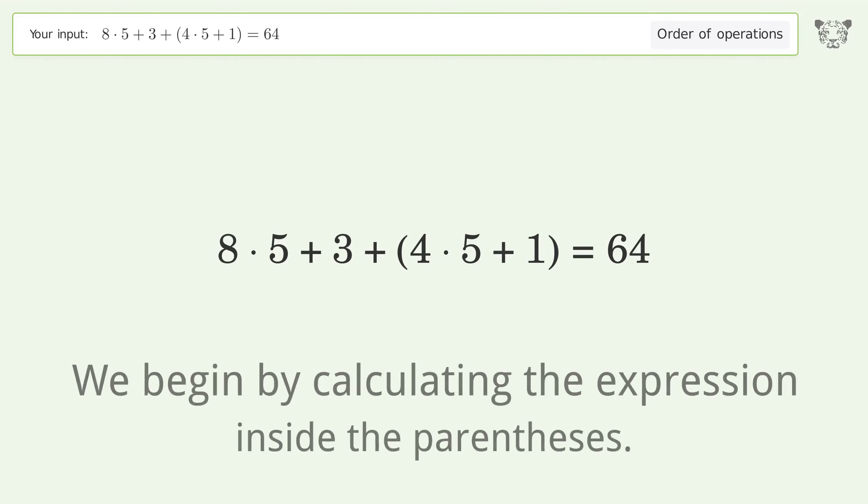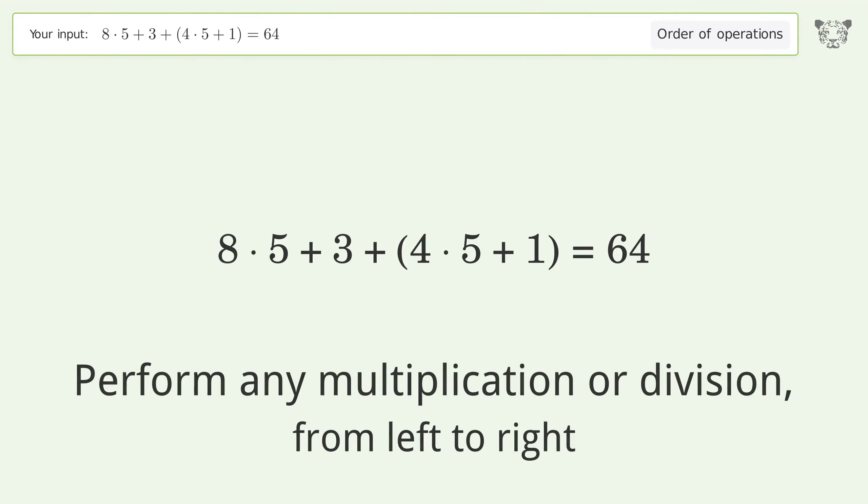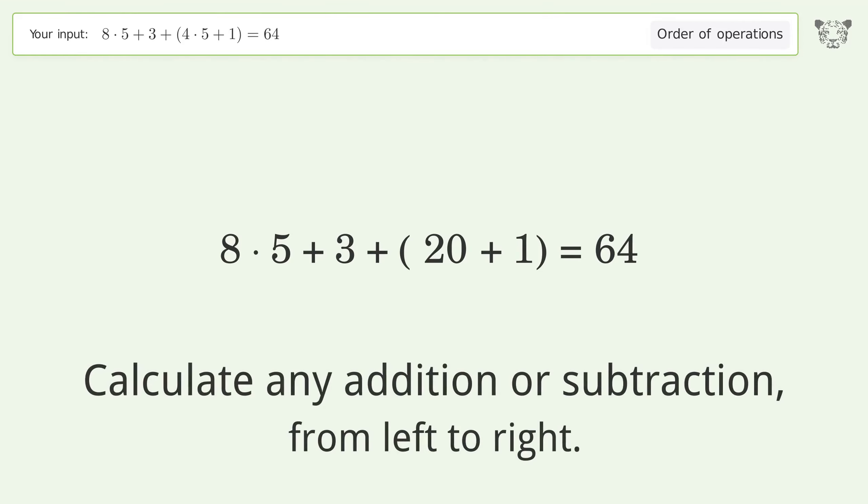We begin by calculating the expression inside the parentheses. Perform any multiplication or division from left to right: 4 times 5 equals 20. Calculate any addition or subtraction from left to right: 20 plus 1 equals 21.